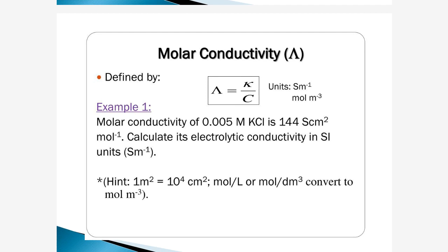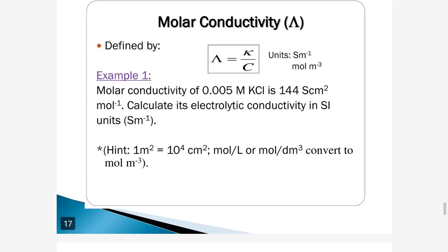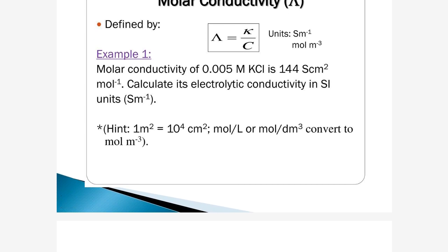Example of molar conductivity: the molar conductivity of 0.005 molar KCl is 141.44 S·cm²/mol. Calculate the electrolyte conductivity in SI units. Hint: 1 m² equals 10⁴ cm², and mole per liter or mole per decimeter cubed must be converted into mole per meter cubed.